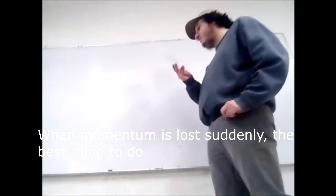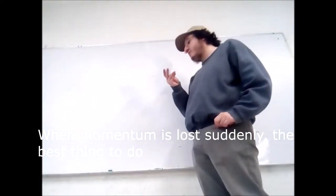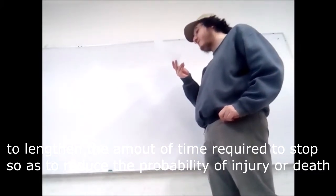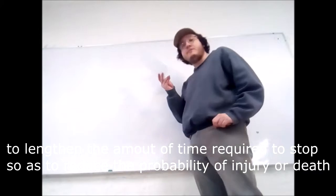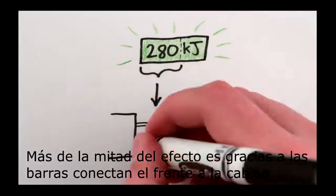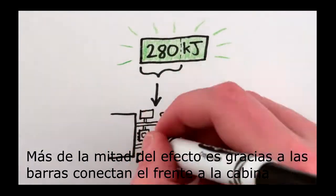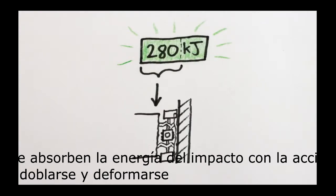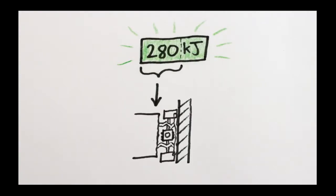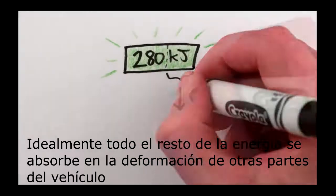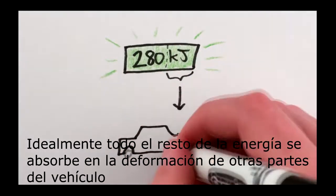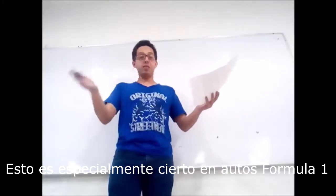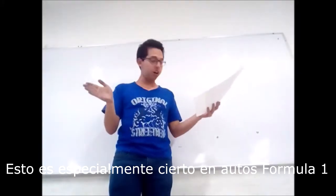When the amount of movement is lost over a very small time interval, the best approach is to enlarge that interval to reduce the damage caused to the body. Over half of the controlled crumpling work is done by a pair of steel rails connecting the front bumper to the body, which bend and deform to absorb energy and slow the car. In ideal circumstances, the rest of the energy is absorbed by the deformation of other structural metal pieces throughout the front of the car — especially true in Formula One cars.